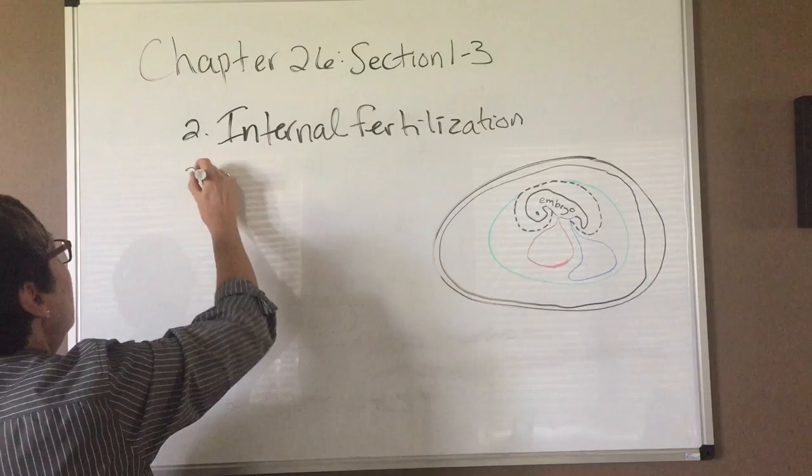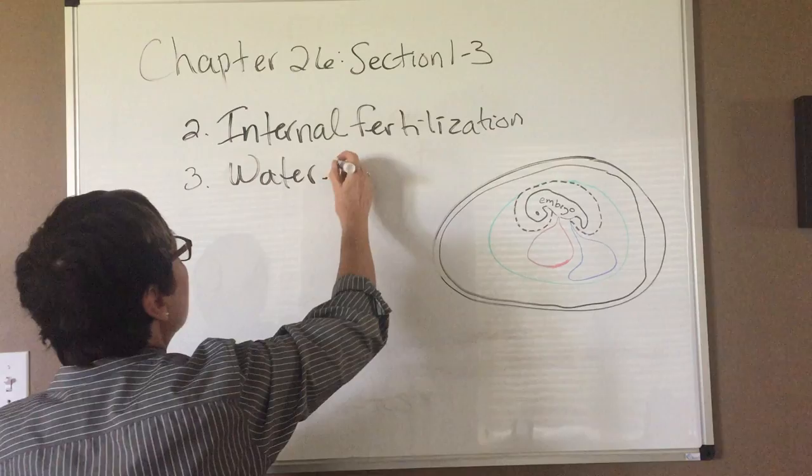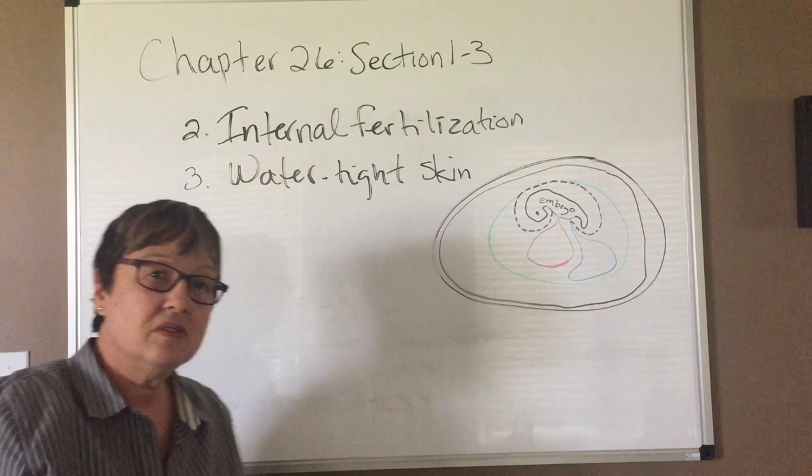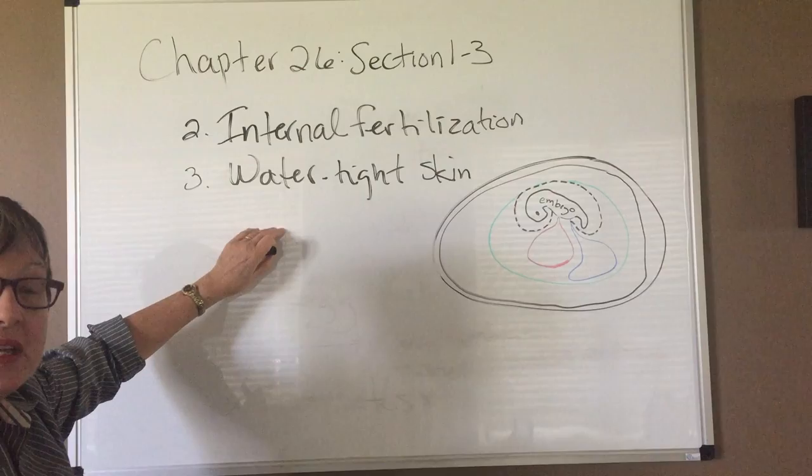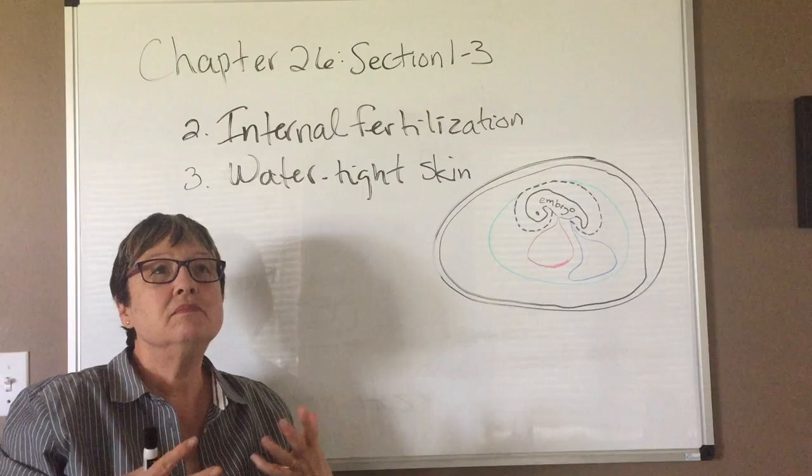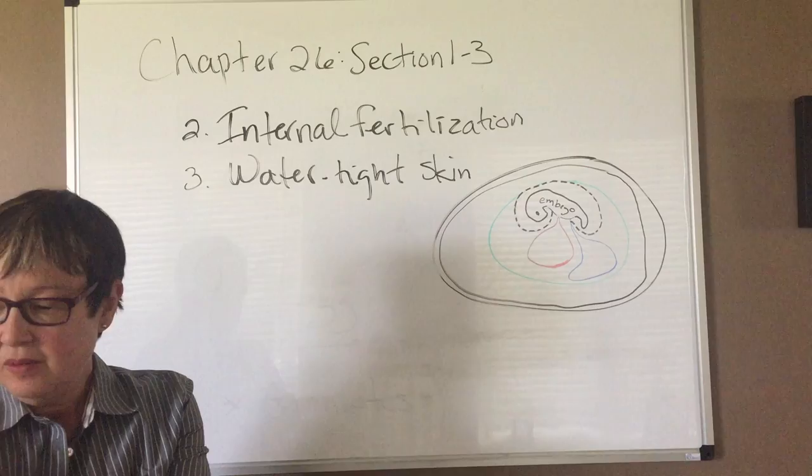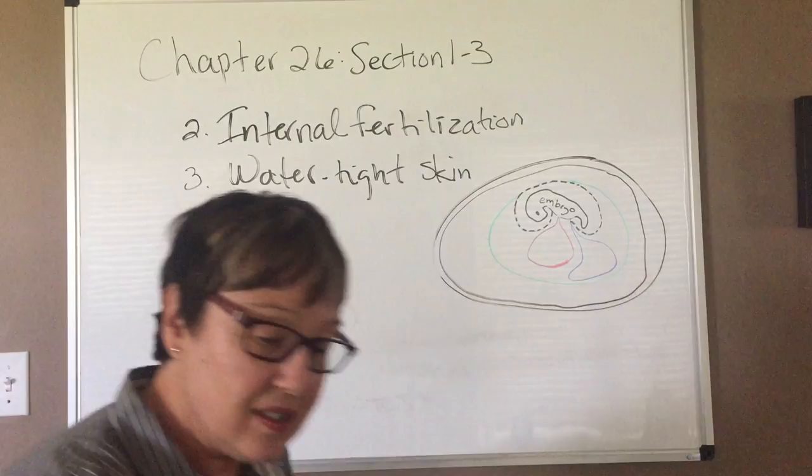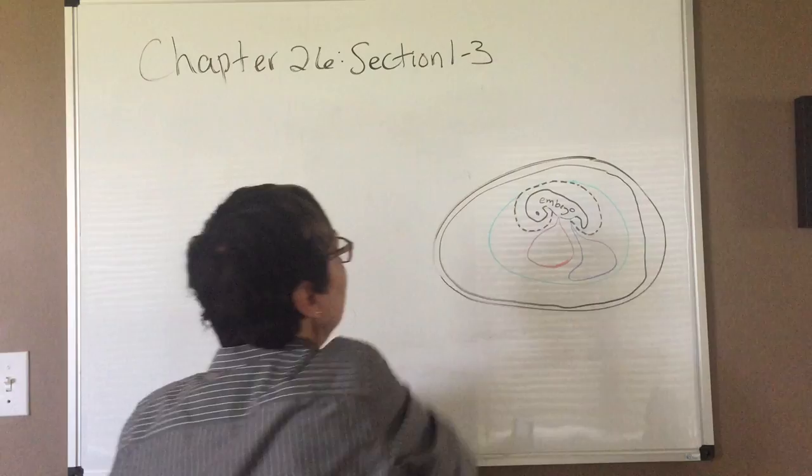Number three is the development of a watertight skin, because that's what your textbook refers to it as. So this is another advancement, another adaptation to the problems that a land-based or terrestrial existence presents. So we've got three advancements. Let's go back to the first one and talk about this egg.